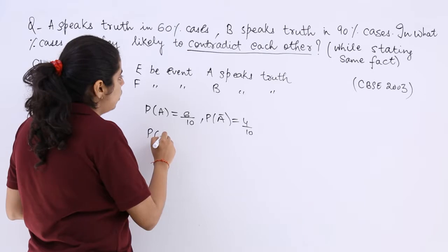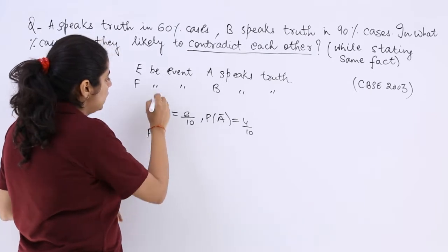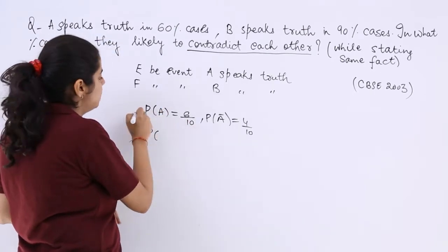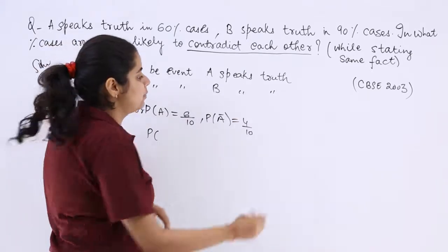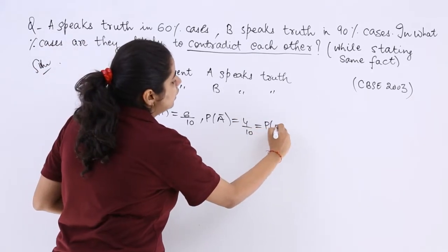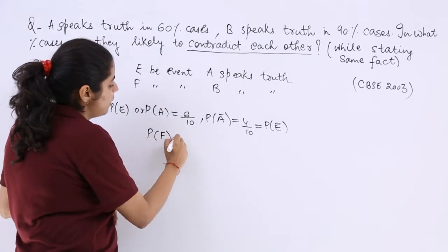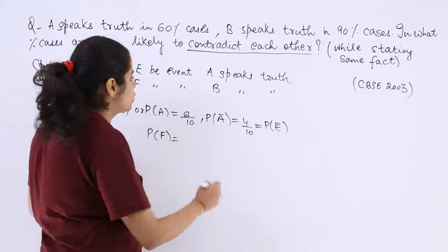Simply, I am sorry, it should be A or this can be taken as probability of E. And this can be taken as probability of not E. Similarly, what is the probability of F, when B speaks the truth.